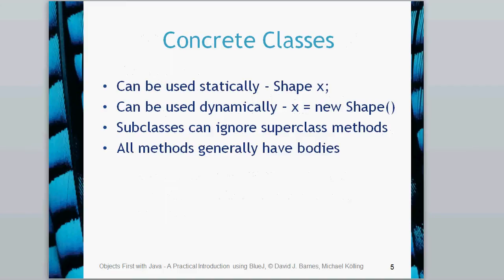A concrete class is every class you have written so far. It's your normal class — a string class, any class from which you can create an object. We can use them statically, e.g. 'Shape x', or dynamically, e.g. 'x = new Shape()', or combined as 'Shape x = new Shape()'. Subclasses can ignore superclass methods if they wish. And all methods in concrete classes generally have bodies.